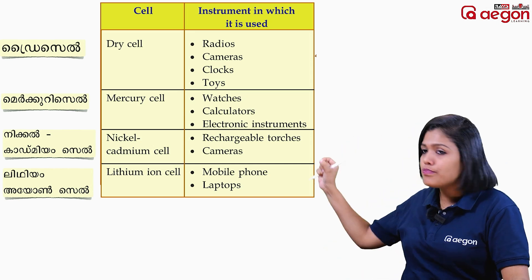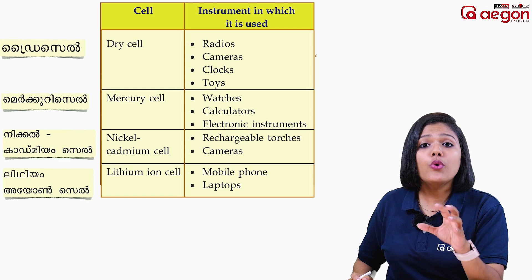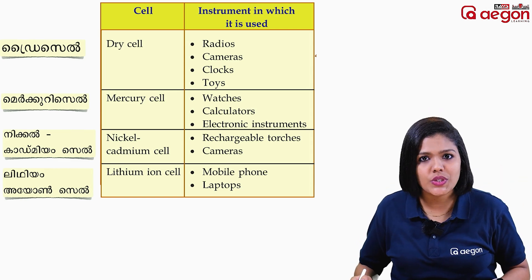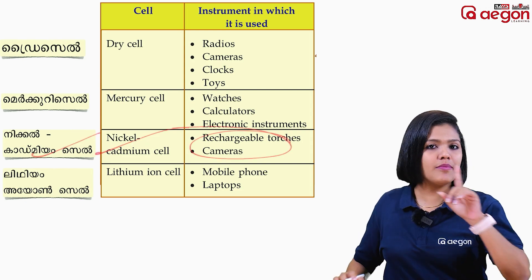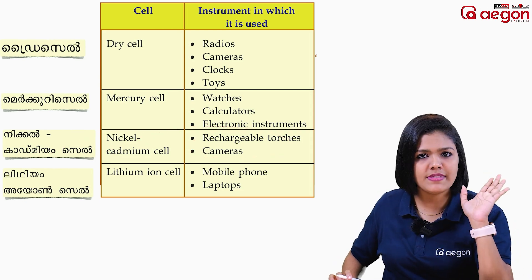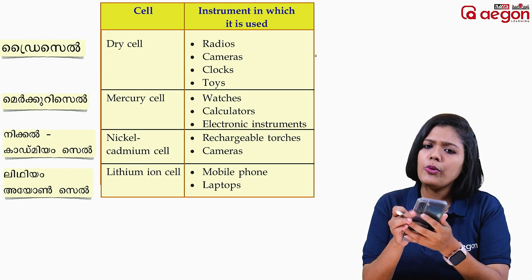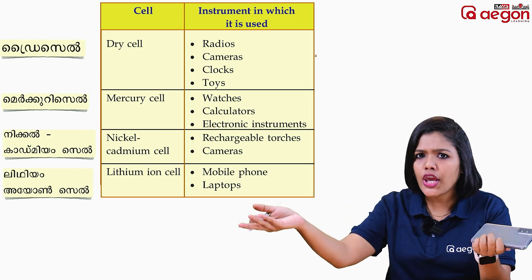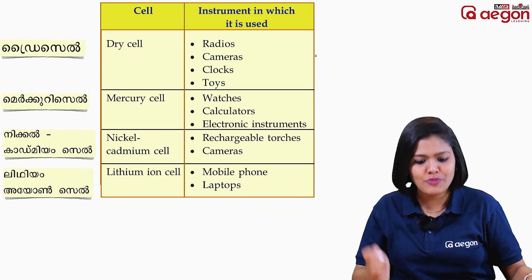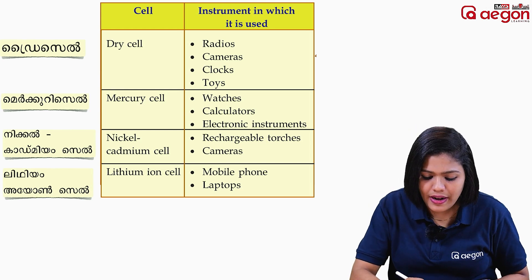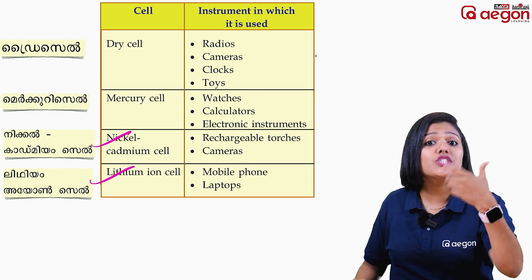This topic is important for the exam. The nickel-cadmium cell is rechargeable. Remember: the rechargeable torch uses the nickel-cadmium cell. Now, regarding mobile phones — I have charge here. You can't always trust your battery; that makes it an unchargeable cell in some contexts.